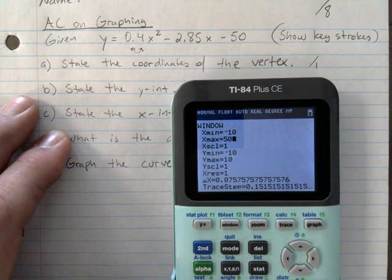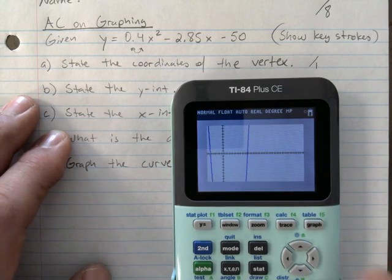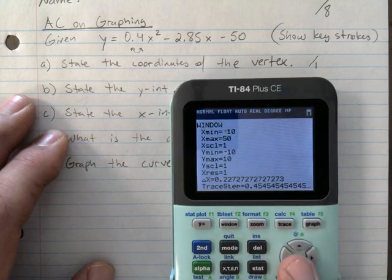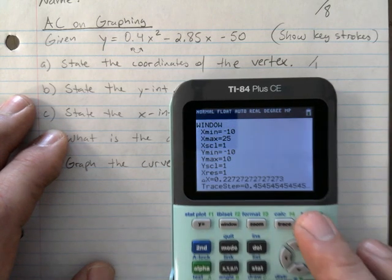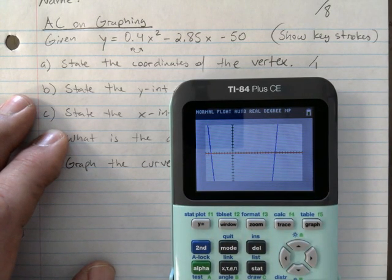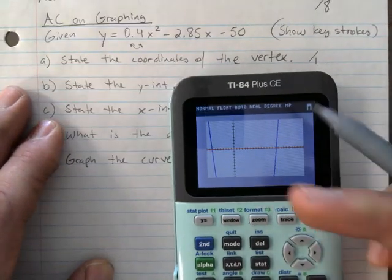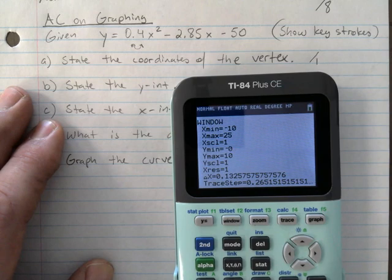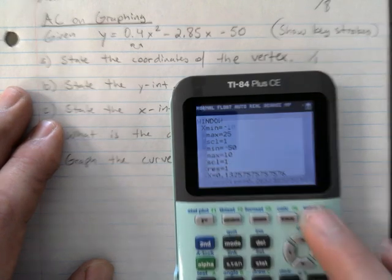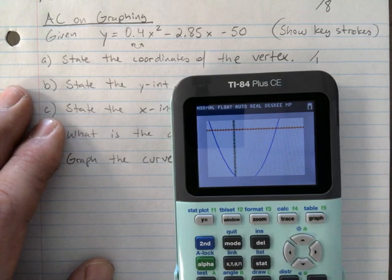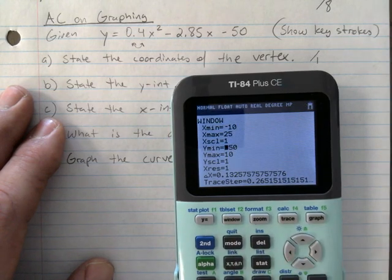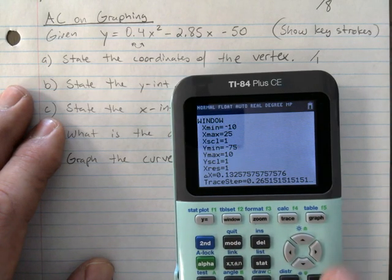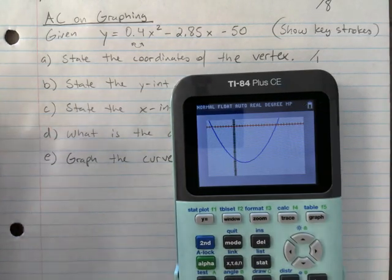I'm going to go 50, hit graph—overkill, right? But that's okay. 25 would probably do, yeah. And then I need to adjust my y min. I'm going to go negative 50. It's probably not good enough, but let's try it. Not quite, almost.